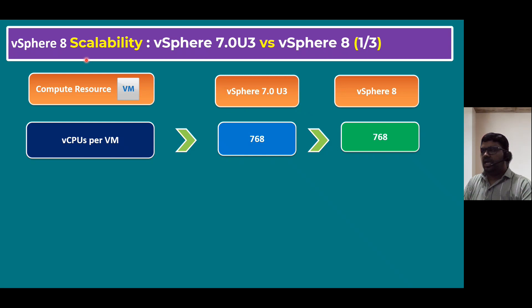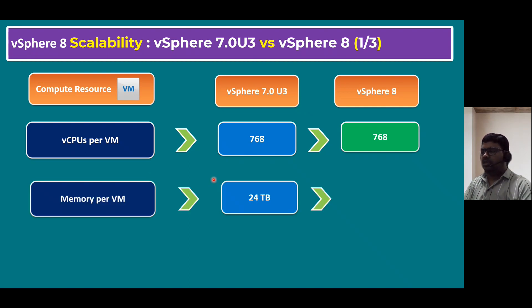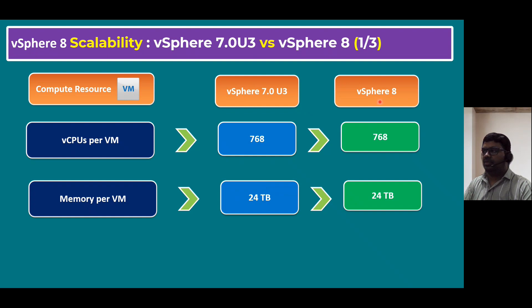vSphere 8 scalability — vSphere 7.0 Update 3 versus vSphere 8 comparisons. Specifically, I'm taking the example of compute resource only from the virtual machine perspective. Virtual CPUs per virtual machine in vSphere 7.0: the maximum virtual CPUs we can assign is 768, and the count is similar in vSphere 8 as well. Another configuration maximum is memory per virtual machine — each VM can be assigned up to 24 terabytes maximum, and this limit is the same in vSphere 8.